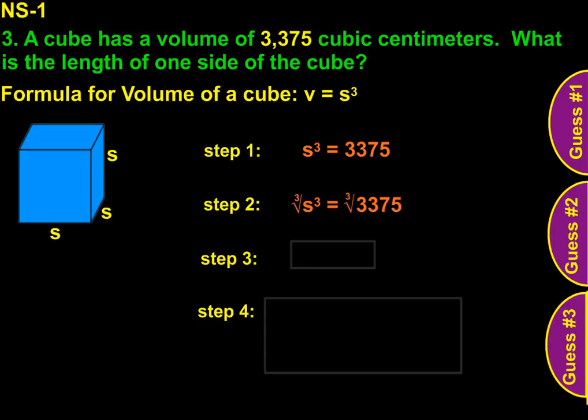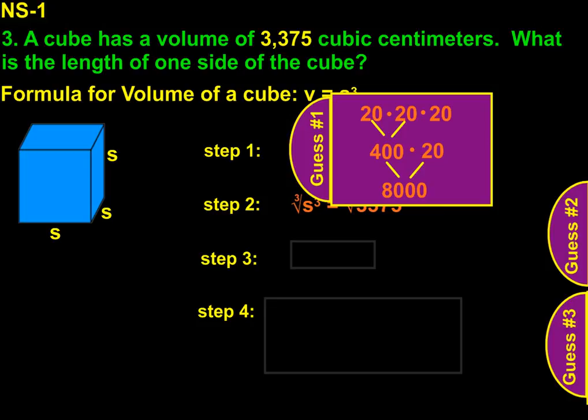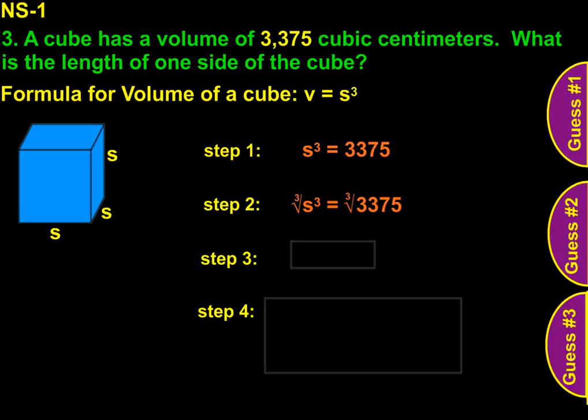I know that 10 times 10 times 10 is 1,000, and that's not even close to where we need to be. So I'm going to jump to another benchmark of 20 times 20 times 20, and I'm going to make that my first guess. So 20 times 20 is 400, times 20 is 8,000. Way higher than I need. So I'm going to start backtracking a little bit.